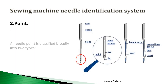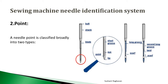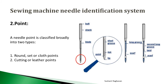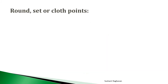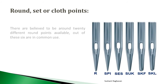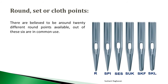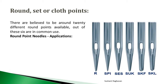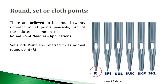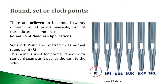Point: Your needle point is classified broadly into two types — round set or cloth points, and cutting or leather points. Round set or cloth points: there are believed to be around 20 different round points available, of which six are in common use. Set cloth point, also referred to as normal round point R, is used for normal fabrics with standard seams, as it pushes the yarn to the sides.